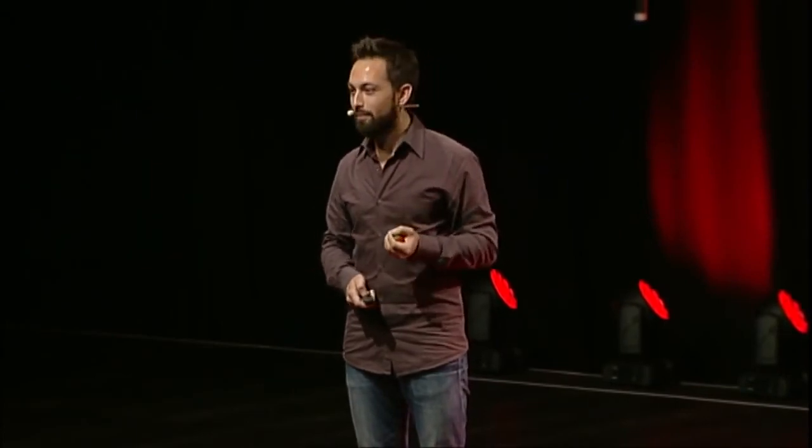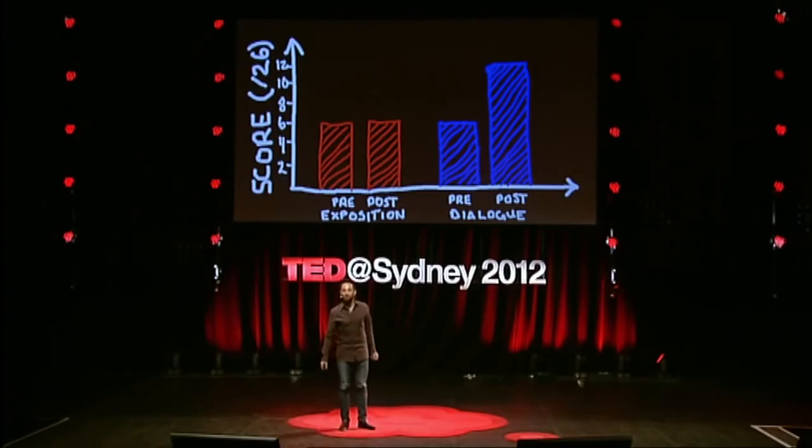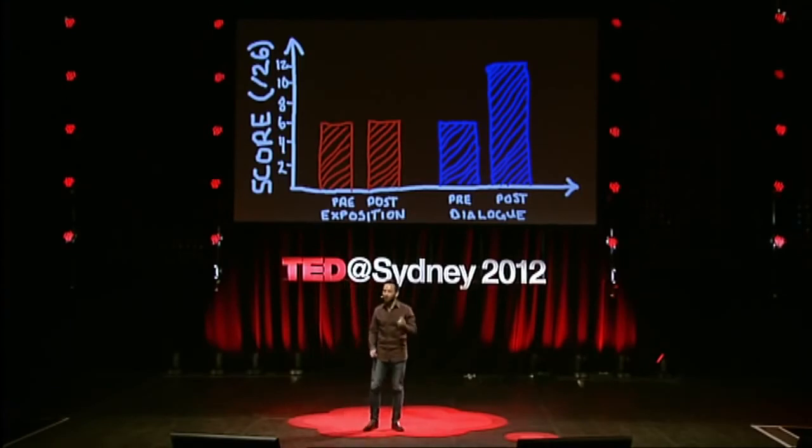What did the dialogue students say? No one told me it was clear. No one told me it was concise. No one said it was easy to understand — in fact, most of the time they told me it was confusing. But on the post-test, their scores nearly doubled to 11 out of 26. It's not 26 out of 26, but it's a start.